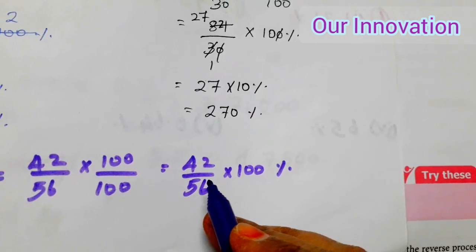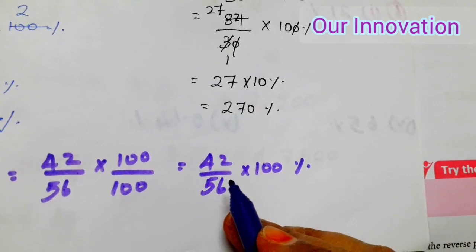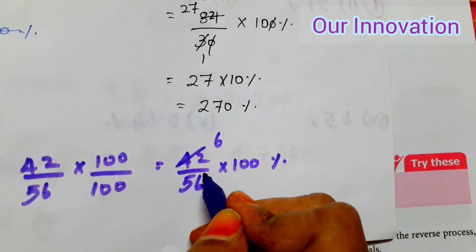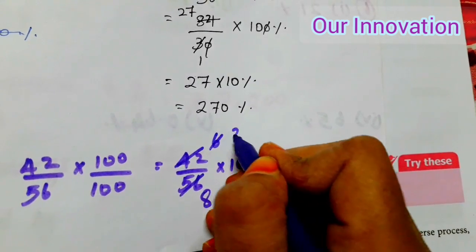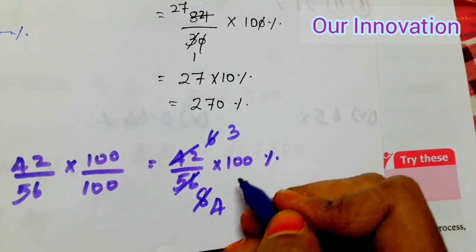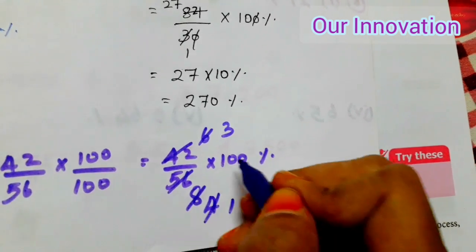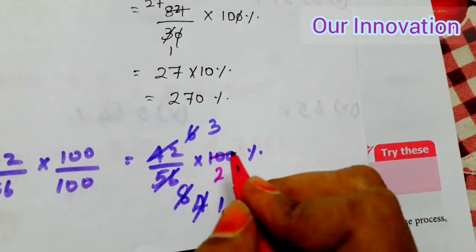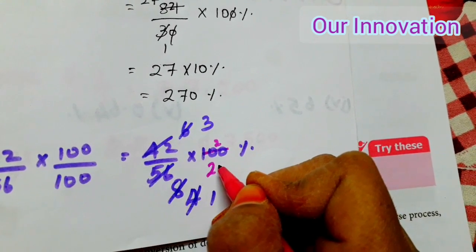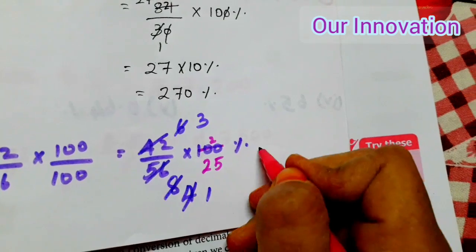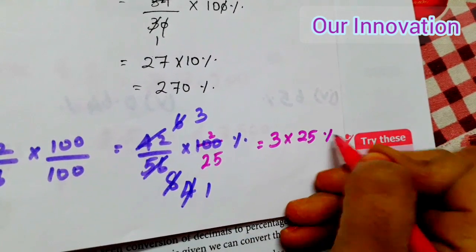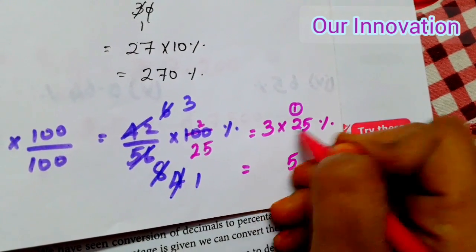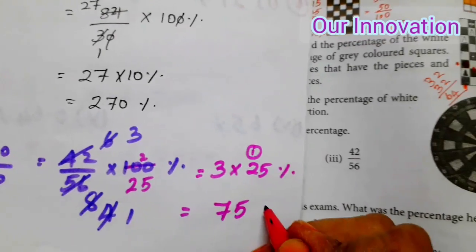Now cancel using the 7th table: 6 × 7 = 42, 8 × 7 = 56. Then cancel using the second table — dividing by 2. Working through: 5 × 3 = 15, balance 1, 3 × 2 = 6, 6 + 1 = 7. The answer is 75 percentage.